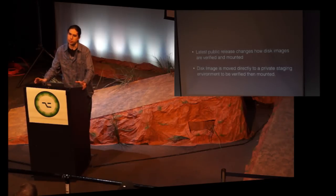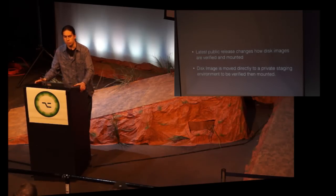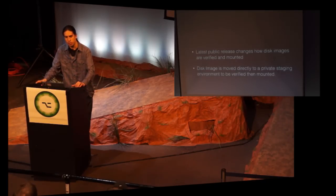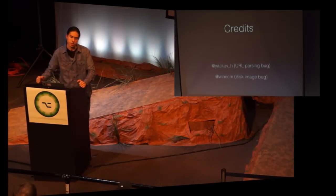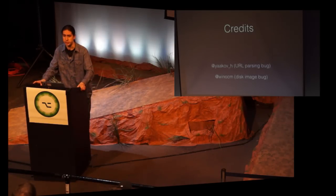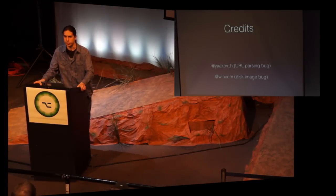This is a bit more tricky to fix in your own code, because how do we test things that aren't really there? It's mainly a lot of verification process and making sure you're mapping files out before you open them. There isn't quite too much you can do other than try to move everything up into memory and keep it there as long as you can. I was working with two people on this: a friend of mine, Yakov, who worked with me on finding and fixing the URL parsing bug a few years back, and a friend of mine, Winocm, for her help in backporting the disk image bug to previous versions of iOS.